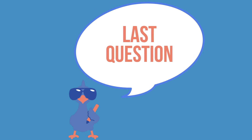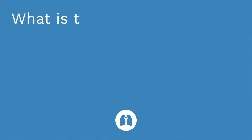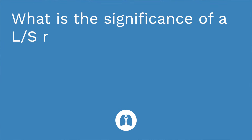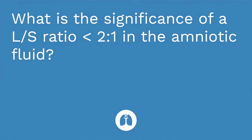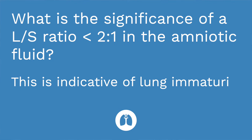Question number three: what is the significance of a LS ratio under two to one in the amniotic fluid? The answer is this means that the baby's lungs are immature, which places them at higher risk for respiratory distress syndrome. That's it for this video. If you found it helpful, be sure to like this video and leave me a comment. Take care and good luck with studying.